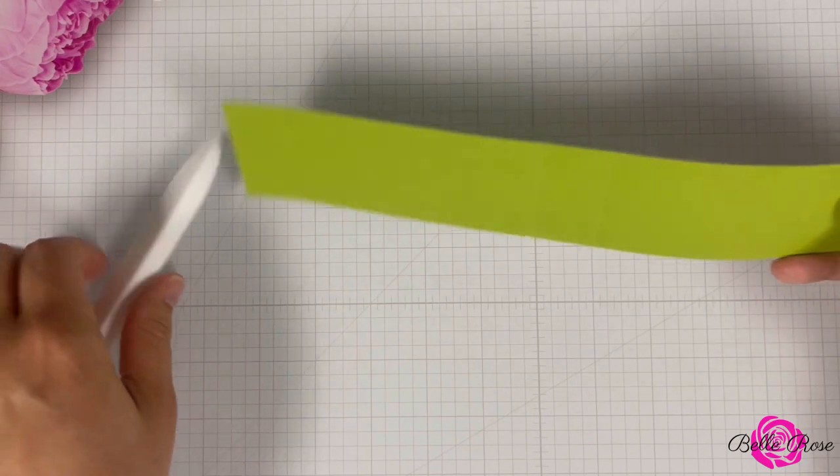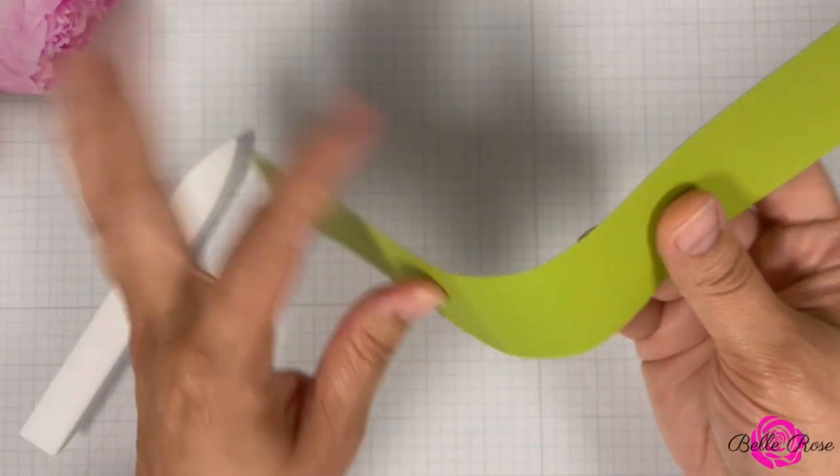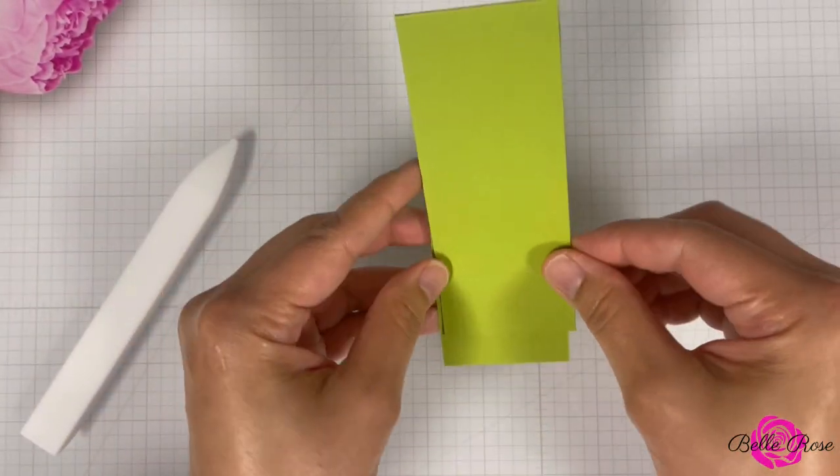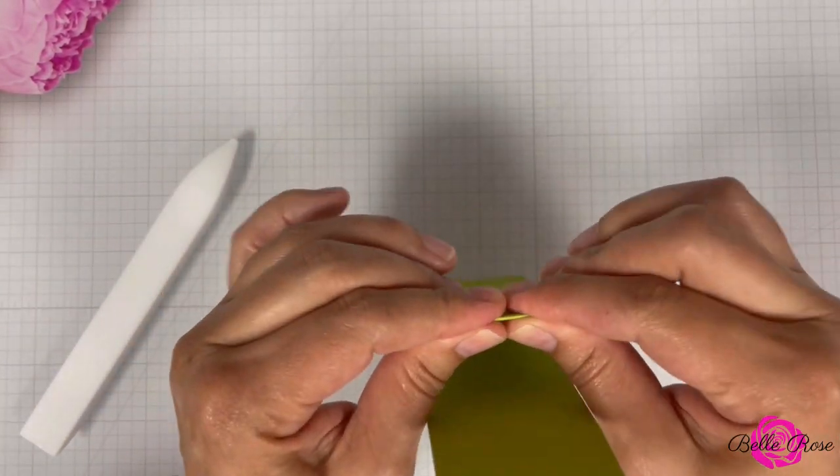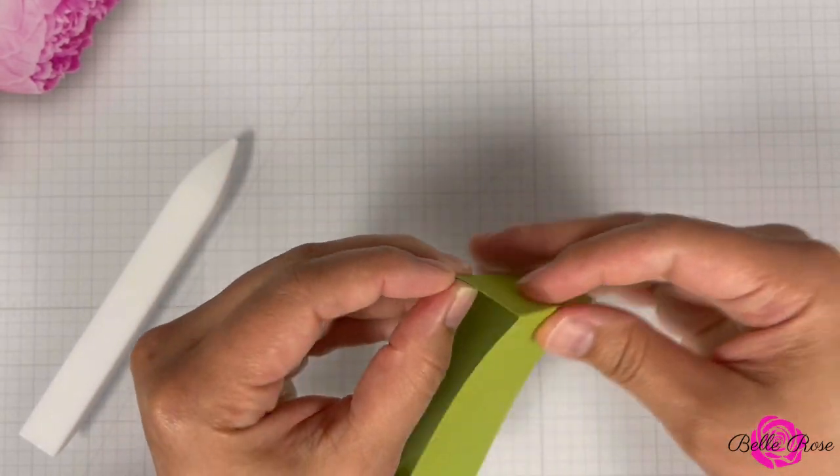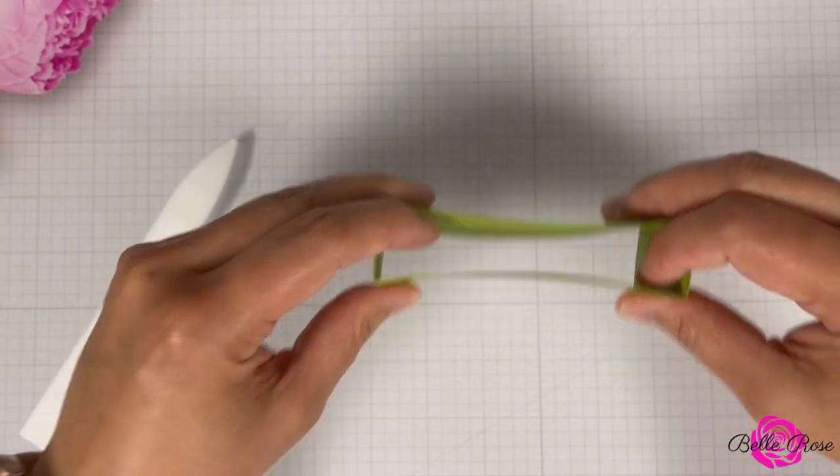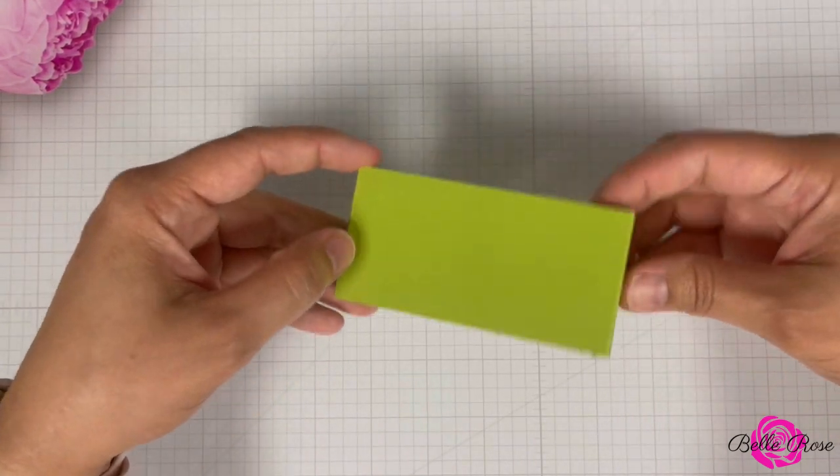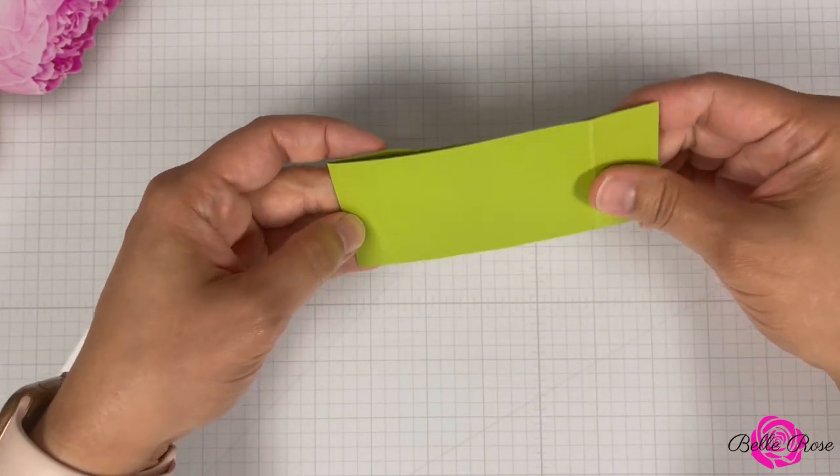Now I'm going to fold along the scored lines. And once I'm done, this will create my box base. This is a really easy project. It is. You don't need a die. Just cut out your cardstock and then score the lines and you'll have your pop-up base.